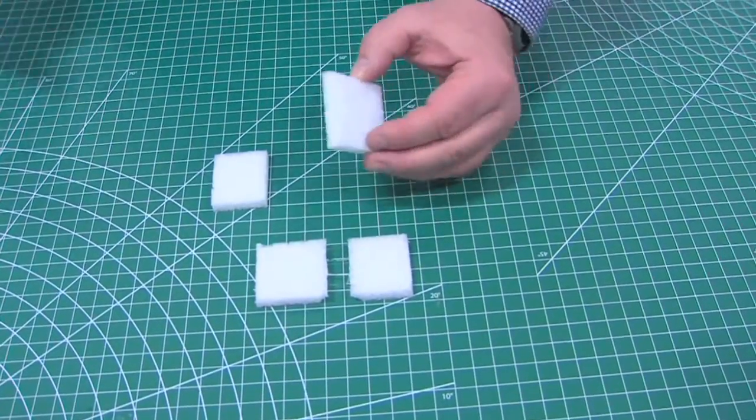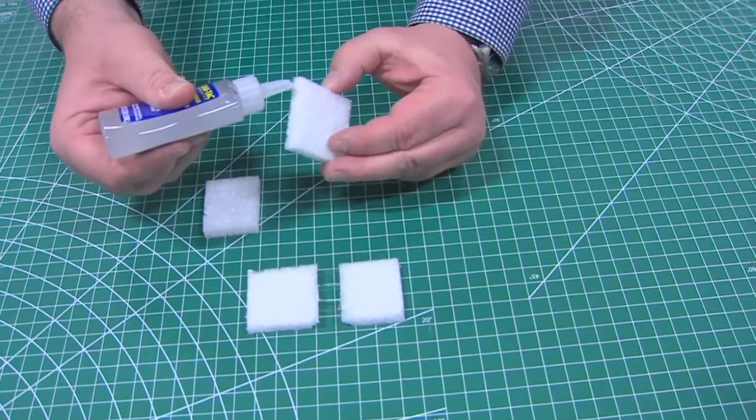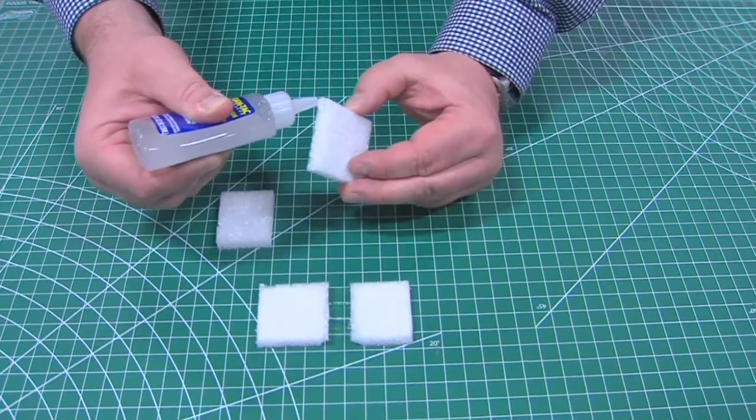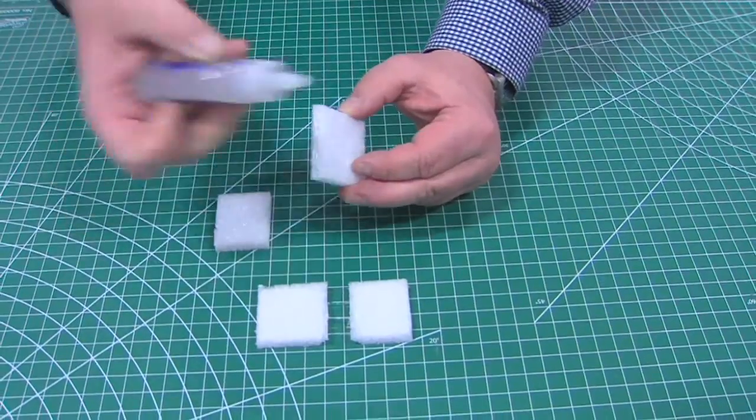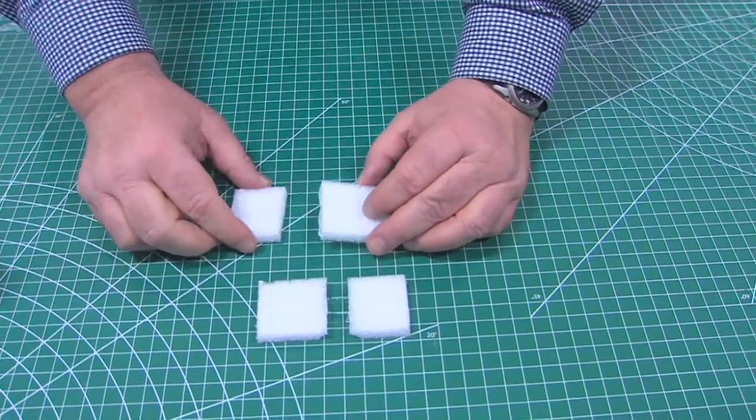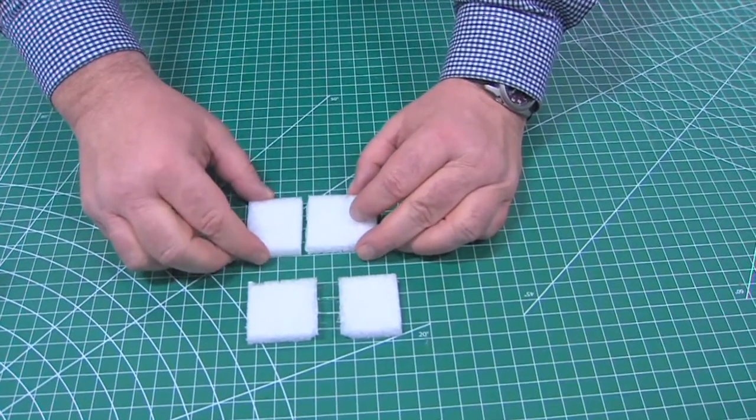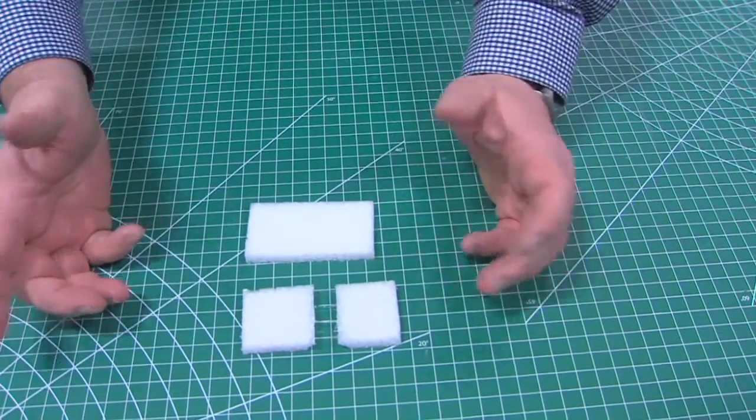In the meantime, I'll show you how we do a butt joint as well. You're just going to put a line of adhesive right down the center of the foam. With foam tack, less is more. You don't need a lot of adhesive, you just need enough to cover. You're going to put it together just like so.